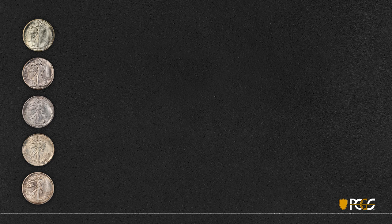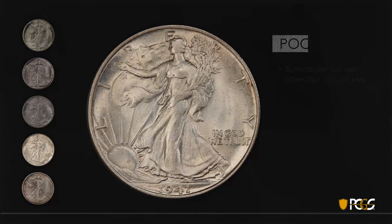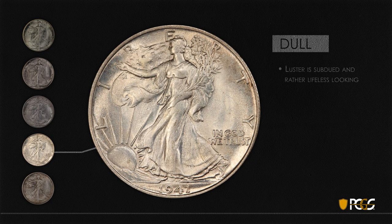Here are five Walkers. We'll start with the coin with little or no luster — the surfaces are flat, completely dull looking. There's some toning on the coin, but it just doesn't reflect much light. This would be a pretty undesirable coin. Next up, we have what we'd call flat, dull, or somewhat subdued luster — a little bit of luster but still rather lifeless, just not the kind of coin most people would want in their collections.